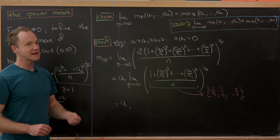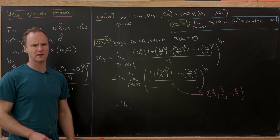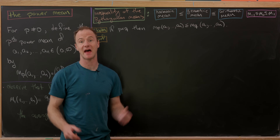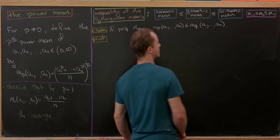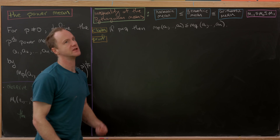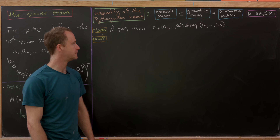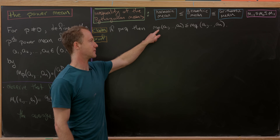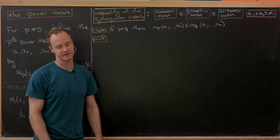Next, we'll prove an inequality involving these power means which immediately implies inequalities about more commonly known means. Let's recall the inequality of the Pythagorean means: the harmonic mean ≤ geometric mean ≤ arithmetic mean. The harmonic mean is m_{-1}, the geometric mean is m_0, and the arithmetic mean is m_1. This motivates the general result: if p < q, then m_p ≤ m_q.